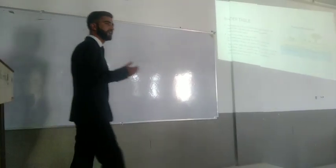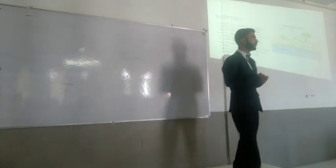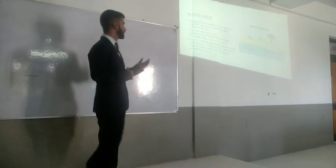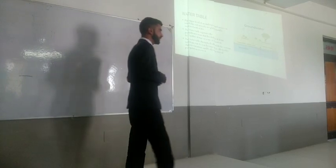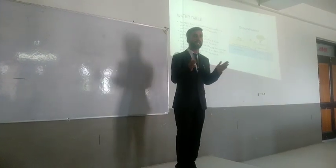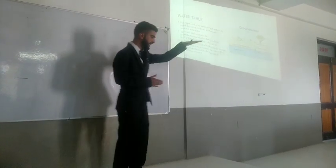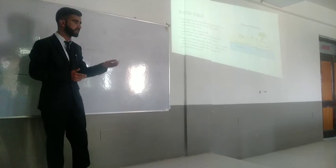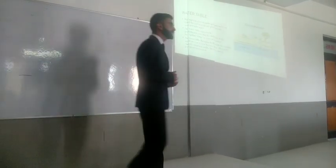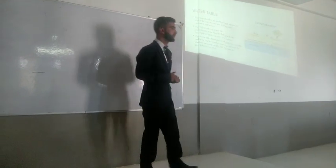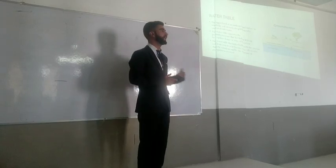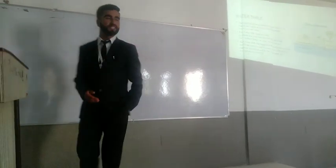The water table is the upper layer of the ground surface in which the pores of the soil are permanently saturated. The water table separates the saturated zone below the ground surface from the aeration zone above. The water table actually fluctuates both with the seasons and from year to year, because it is affected by climatic variations and depends upon the amount of precipitation.